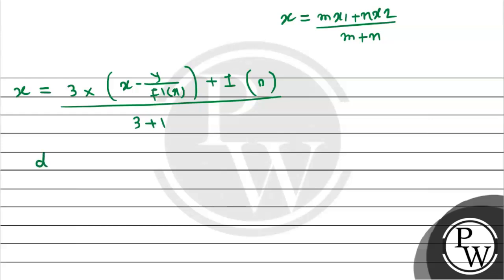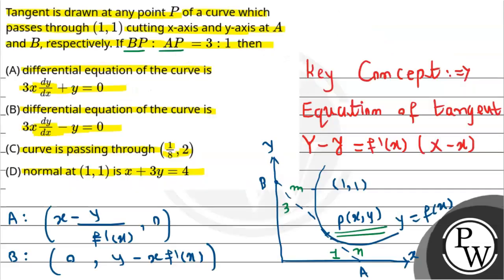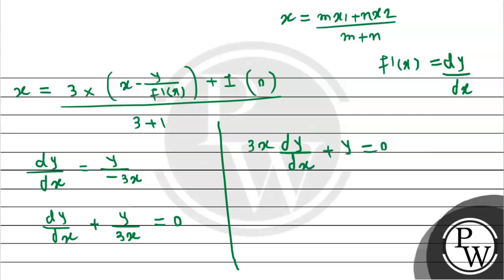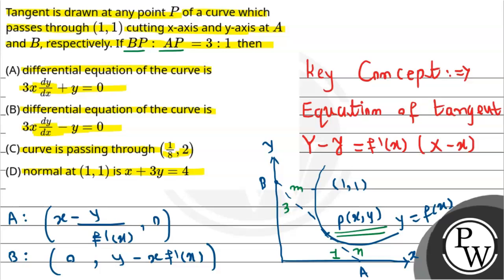Solving this, we get that 3y/dx — that is f'(x), which represents dy/dx — becomes y divided by minus 3x. Now to represent this in differential equation form, we bring terms to one side: dy/dx plus y/(3x) = 0. Multiplying both sides by 3x gives us 3x·dy/dx plus y = 0. So this differential equation matches option A, which is correct, and option D is incorrect.